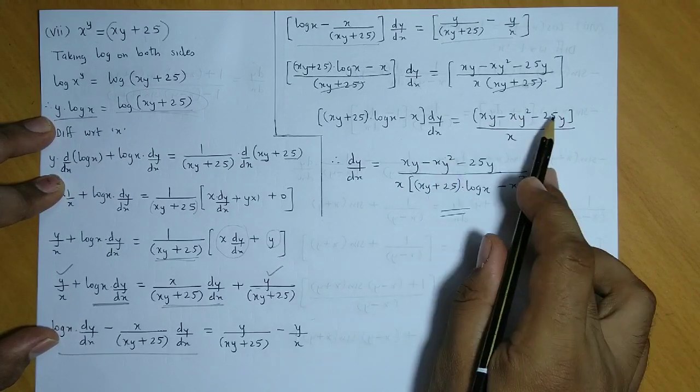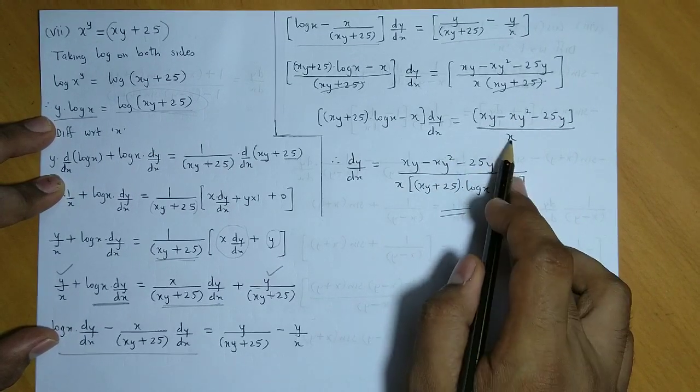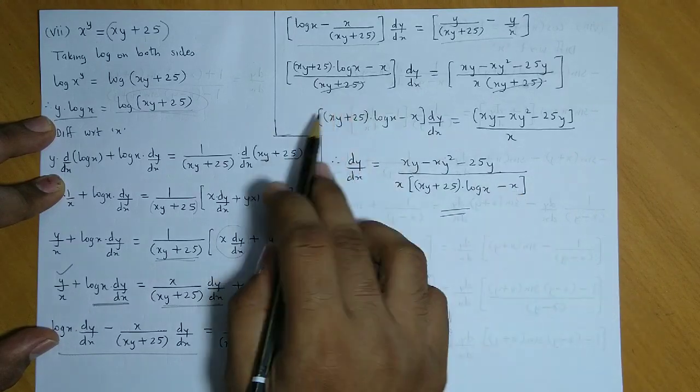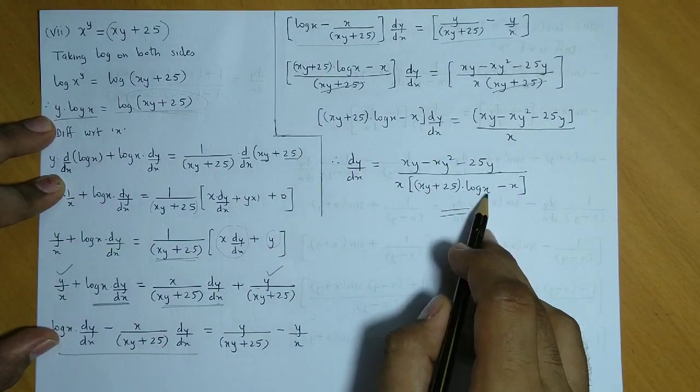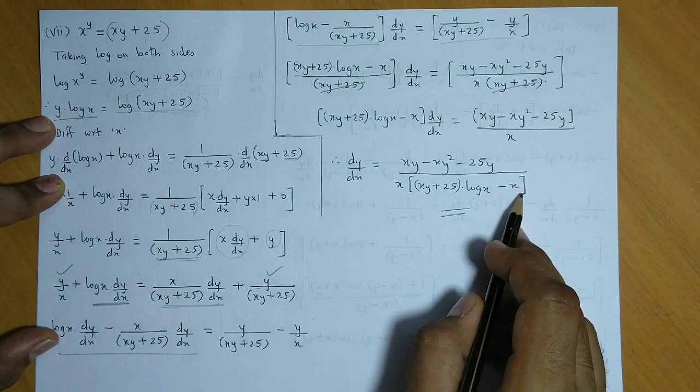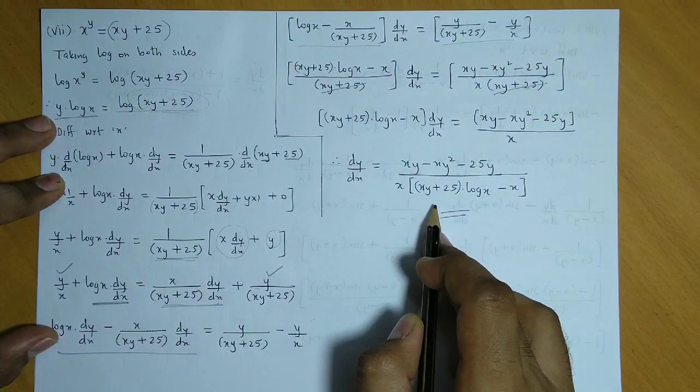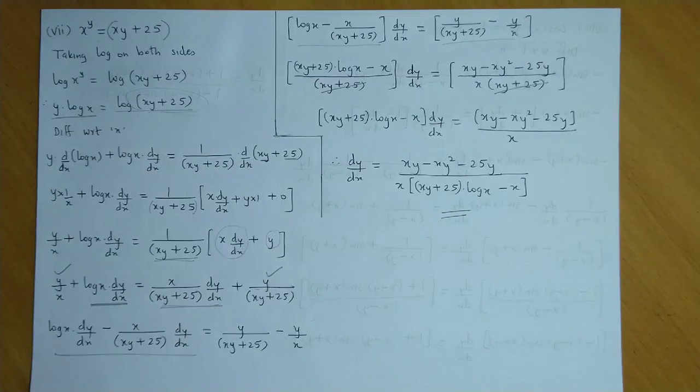So we get dy by dx is equal to xy minus xy square minus 25y upon x into this whole bracket in the denominator. So xy plus 25 into log x minus x. So this is the value for dy upon dx.